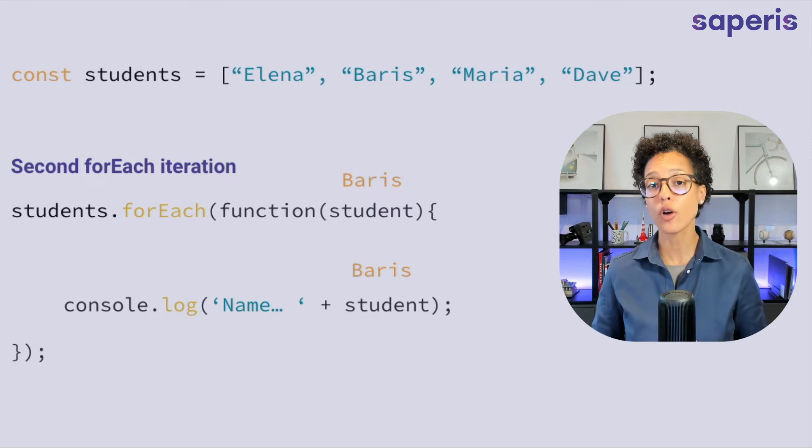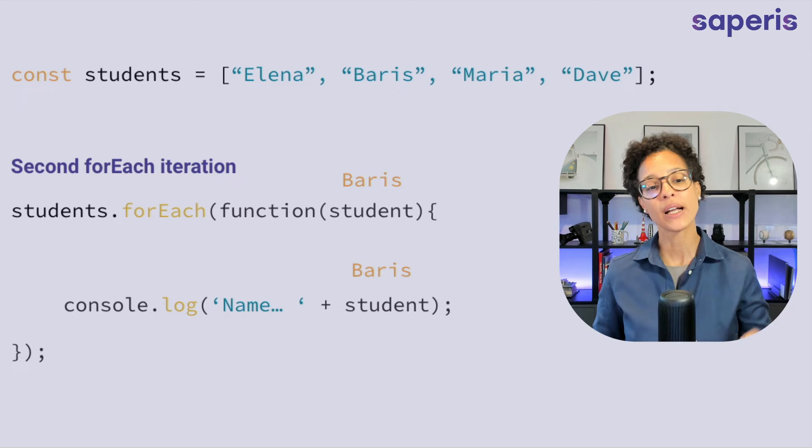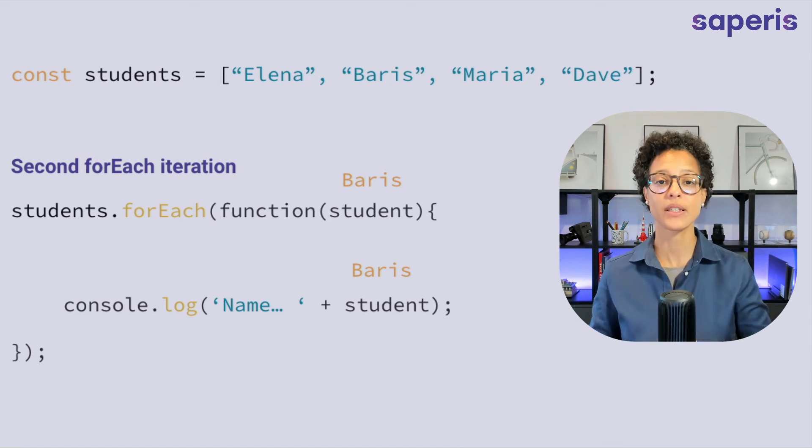So unlike the for loop, by the way there's a video to the for loop that I'm going to link right about now, unlike that for loop you don't have to set a counter and increment it. The forEach method does that all for you.